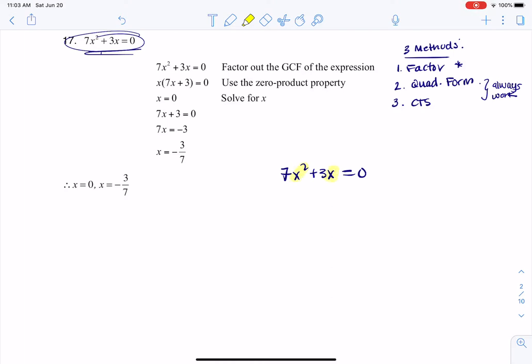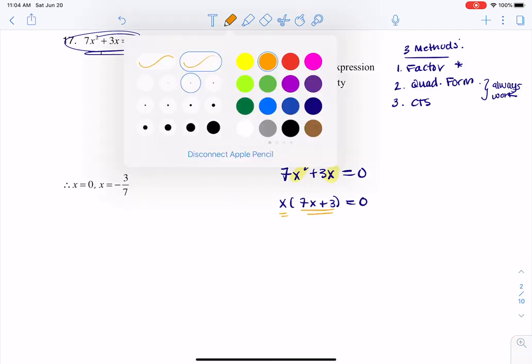You see there's an x² and an x here, so let's go ahead and factor out the x to get x(7x + 3) = 0, and then I have two terms that multiply to 0, right? I have an x and I have a 7x + 3.